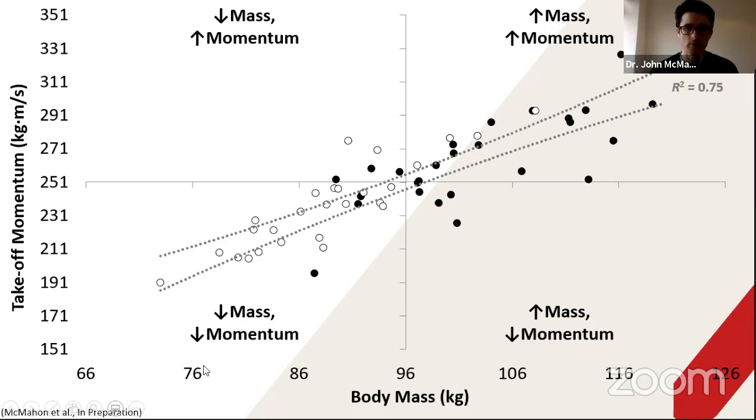What I've done is produce a quadrant scatter chart where you've got the average body mass and the average takeoff momentum for a group of forwards and backs in professional rugby league. The forwards are the black circles and the backs are the clear circles.